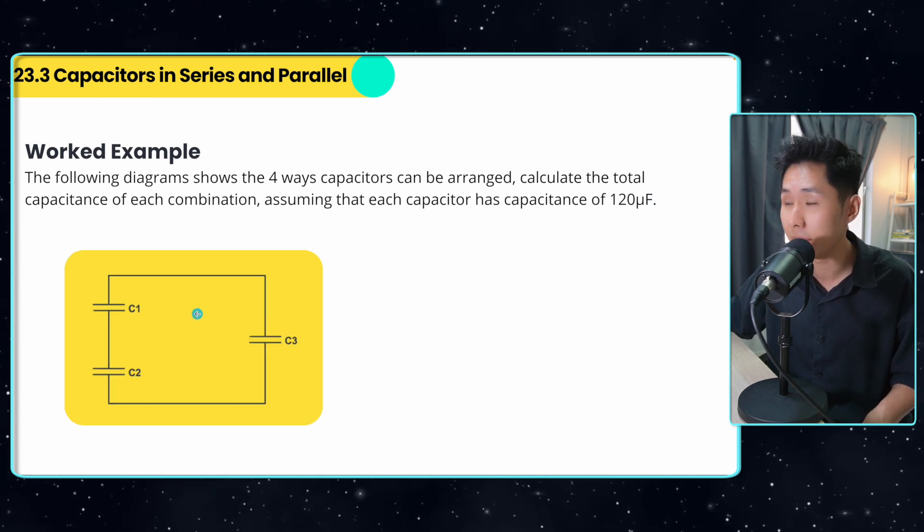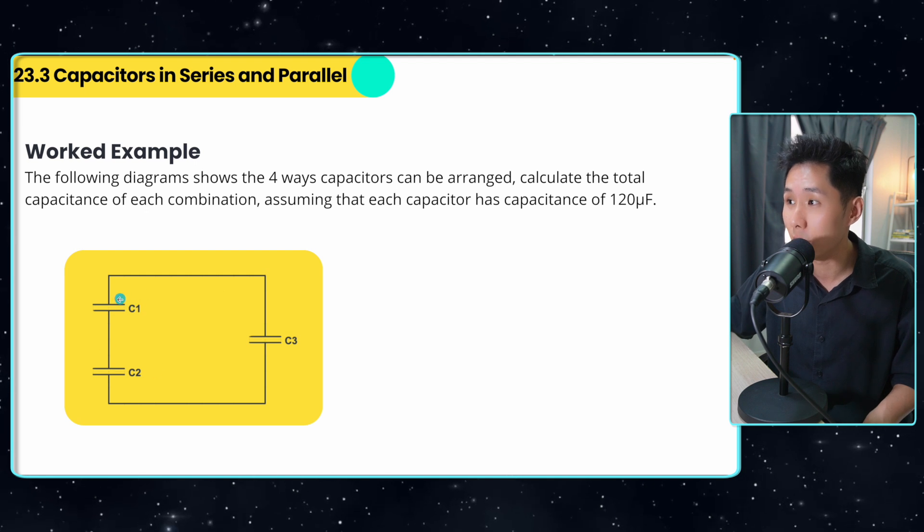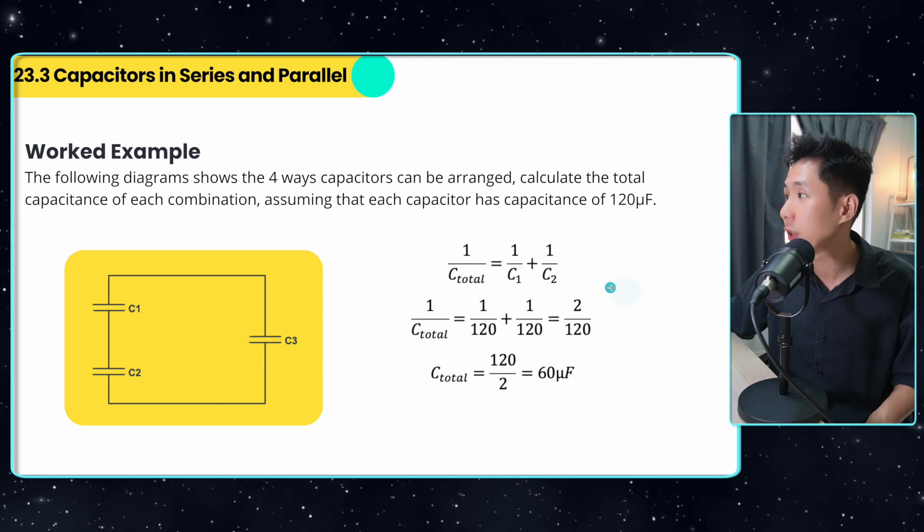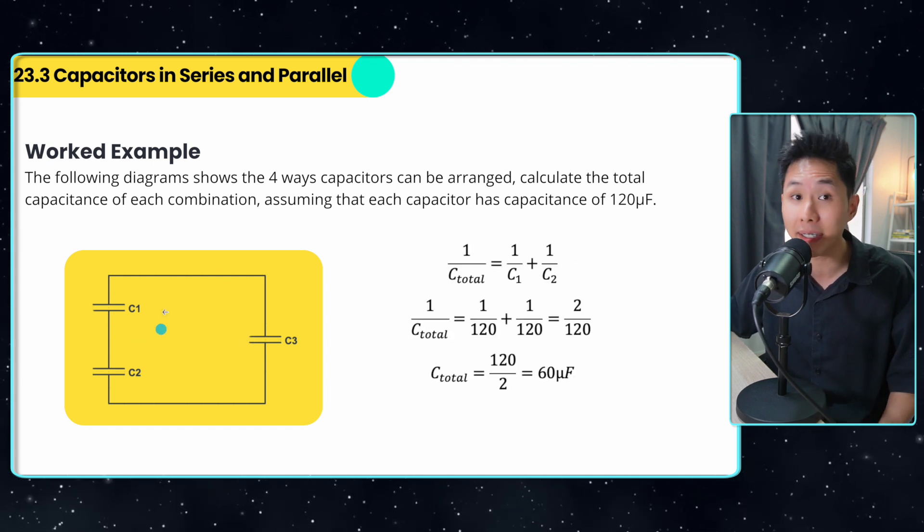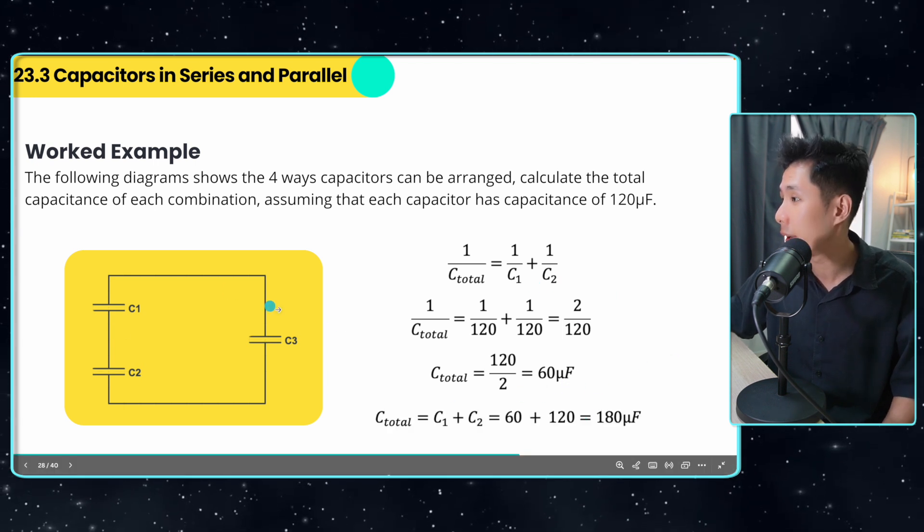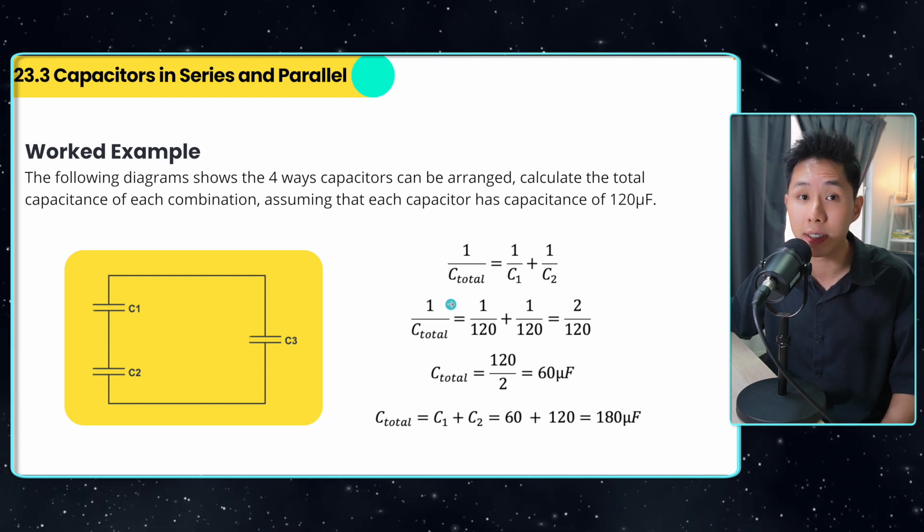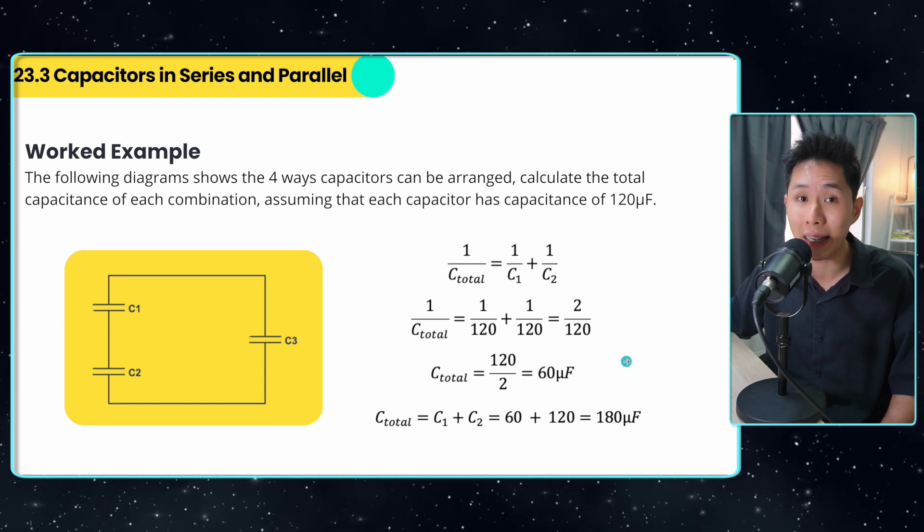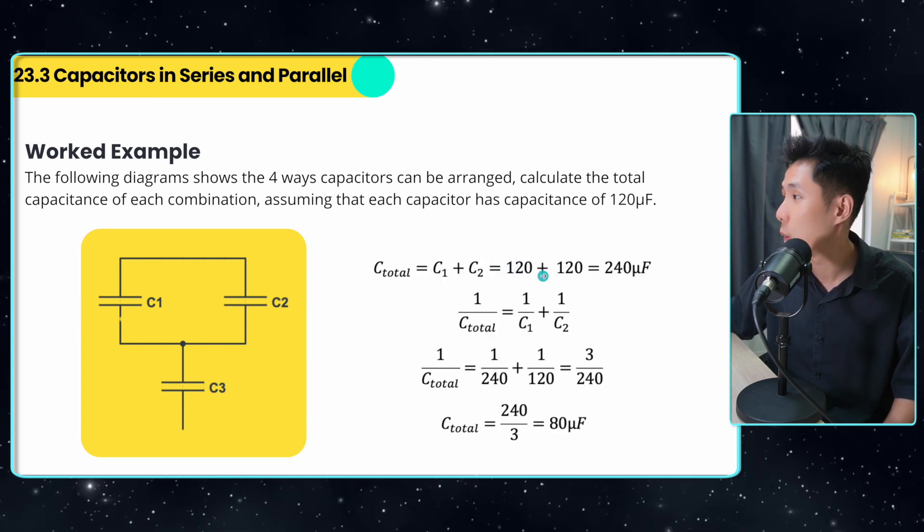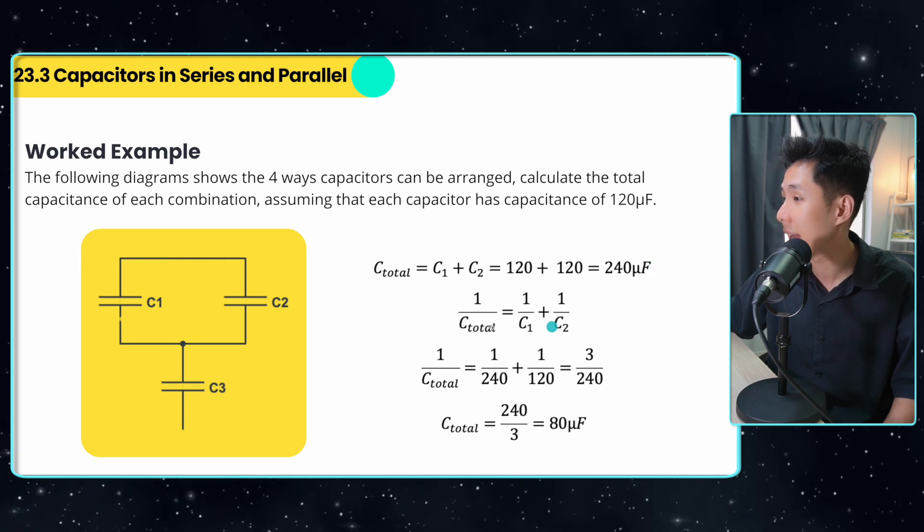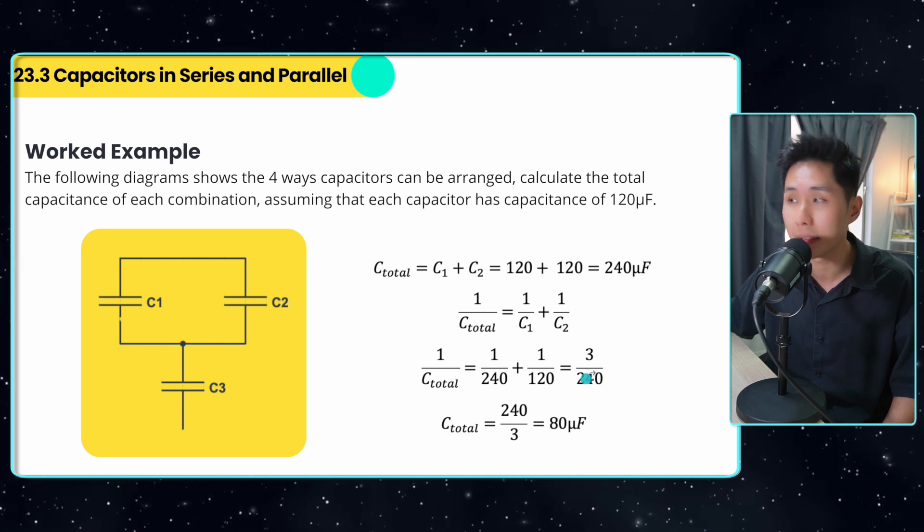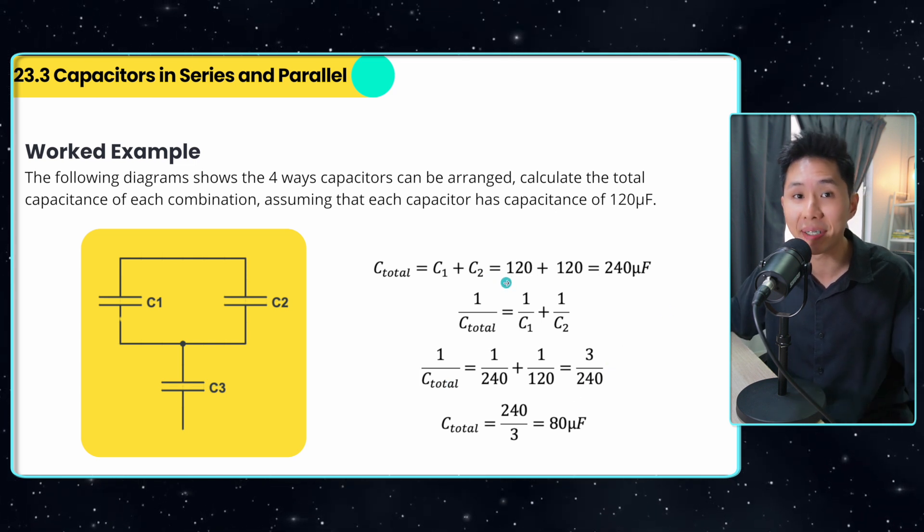Now, this case is a little bit different. You have two C1 and C2 arranged in series. And the pair of these arranged in parallel in conjunction with C3. So what I would do is that I will calculate the capacitance here first using the formula, which is 60 microfarad, and then add them up with 120. Because they are in parallel, I can just sum them up, which will give me 180 microfarad. And the next question, we have C1 and C2 arranged in parallel. So again, I could just add them up first before adding it in series with another component, which will give me 80 microfarad. So these are just the four ways capacitors can be arranged.